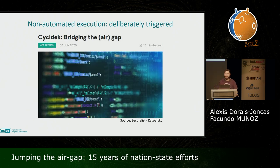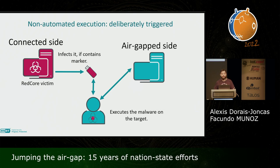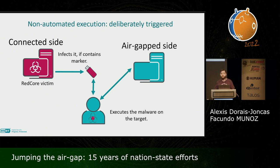Let's take the interesting case of USB Culprit by APT CycleDed, also known as Goblin Panda. In this case, the code running on the connected side responsible for weaponizing designated USB drives copies the malware for the air gap system into a hidden folder on the drive without any execution vector. Analysis indicates the only possible way for the malware to execute is if someone knows exactly where it is hidden and launches it deliberately, and there is no indication that it is part of an update mechanism on the air gap side.